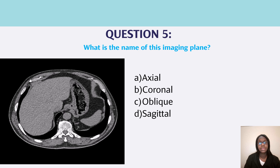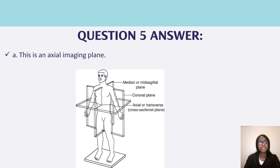Question five, what is the name of this imaging plane? Axial, coronal, oblique, or sagittal? This imaging plane is called the axial imaging plane. You can see an illustration so that it can help you figure out how the slices are being cut for each plane.